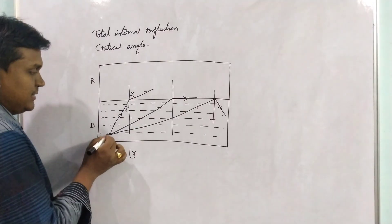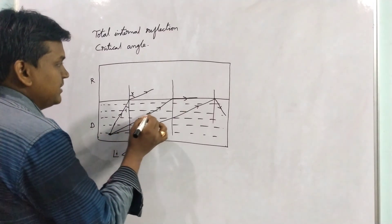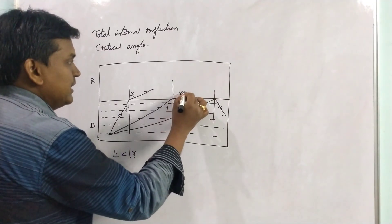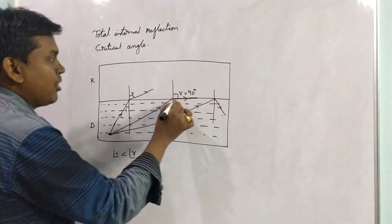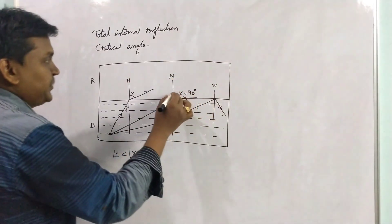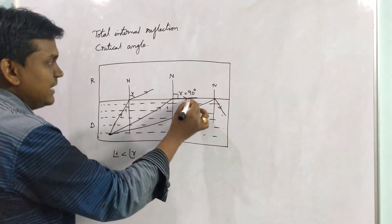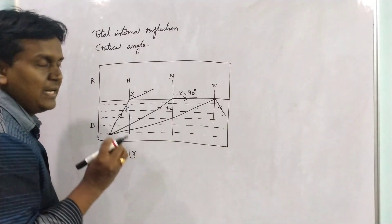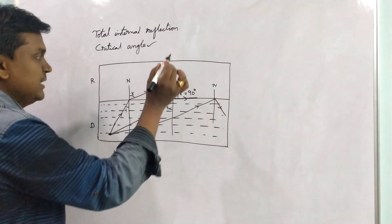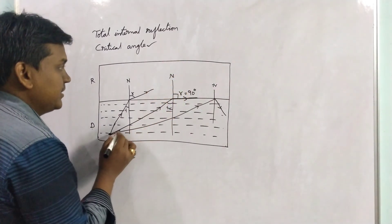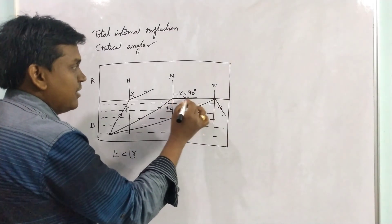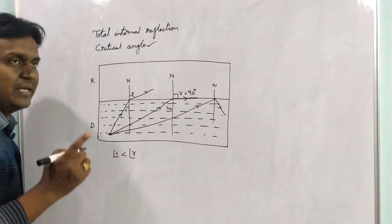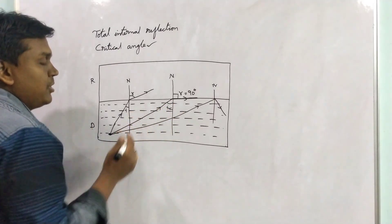Now consider a second ray also travelling from optically denser to rarer. This is the angle of incidence I and this is the angle of refraction R, and here the angle of refraction R is making 90 degrees with the normal. So if the angle of refraction makes 90 degrees with the normal, then the angle of incidence I will be equal to C — that is what we call the critical angle. The refracted ray makes 90 degrees to the normal, so the incident angle is called the critical angle.